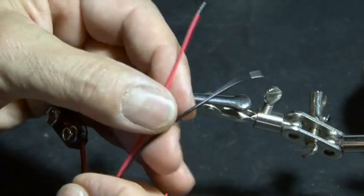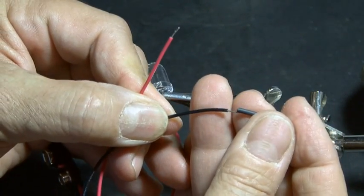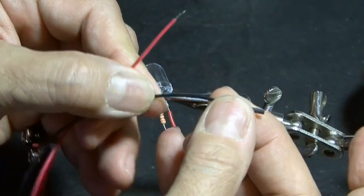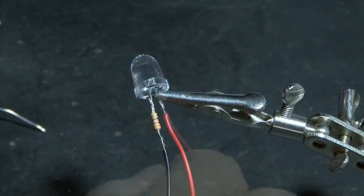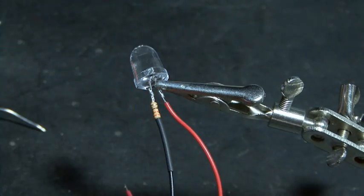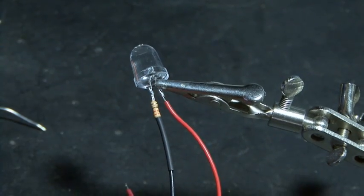Now grab the 9-volt battery clip, and we'll put a small piece of heat shrink tubing over the negative lead of that 9-volt battery clip and solder that to the other end of the resistor. Now we're going to make sure all the connections are right and everything's working before we shrink the tubing, so don't do that quite yet.